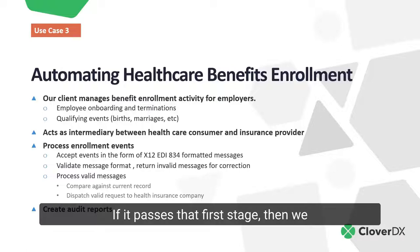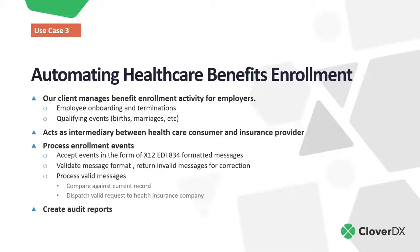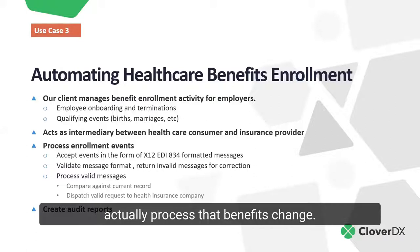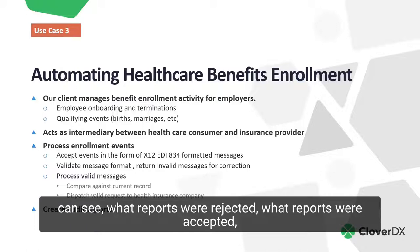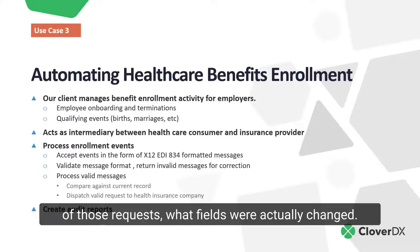We'll return them and say this form is filled out incorrectly. If it passes that first stage, then we can actually process it — compare the change request against the current record for that employee, use that to build an official request to dispatch to the insurance company to actually process that benefits change. And then we want to create audit reports of everything that we do, so that the client can see what reports were rejected, what were accepted, and of those accepted requests, which fields were actually changed.